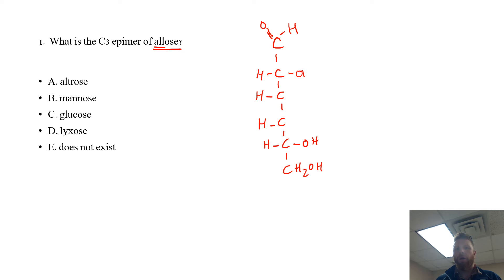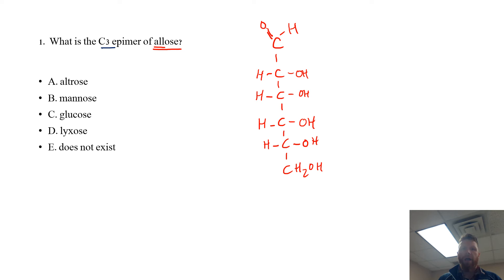Allose is kind of an easy one to remember because all of the hydroxide groups on allose are on the right-hand side of the molecule: OH at carbon number two, OH at carbon number three, and OH at carbon number four. What this question is asking specifically is: what is the C3 epimer of allose? To answer that question you have to know, first of all, where is carbon number three?